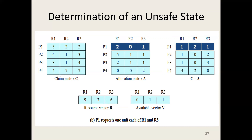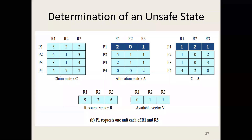The available vector is 0 from R1, 1 from R2, 1 from R3. We have P1, P2, P3, P4 — none of these processes can complete, because none of them can fulfill their maximum need from the available vector with 0, 1, 1 available. That means this is an unsafe state.